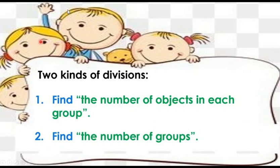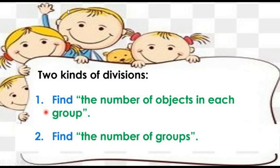We have already learned two kinds of divisions. In the first one, we can find the number of objects in each group. In the second one, we can find the number of groups. In our previous class, we did two word problems where we solved how to find the number of objects in each group. Today we are going to solve another two problems where we will find the number of groups. Let me discuss these two kinds of divisions again for your better understanding.